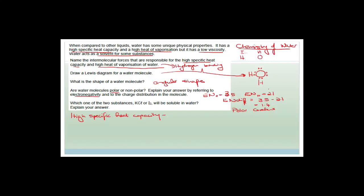Now let's talk about the charge distribution. Because oxygen has got a higher electronegativity than hydrogen, the oxygen attracts the electrons to it. The electrons from the hydrogen are going to spend a lot more time traveling around the oxygen than around the hydrogen. So oxygen becomes slightly negative, and the hydrogen atoms are slightly positive. If you looked at the water molecule from the hydrogen side you'd see it as slightly positive; from the oxygen side, slightly negative — that's the charge distribution.